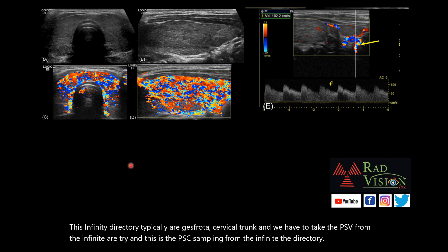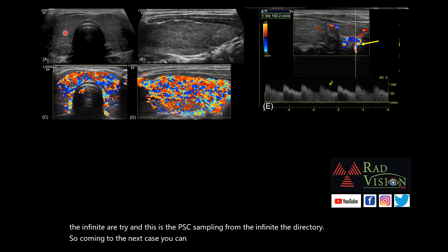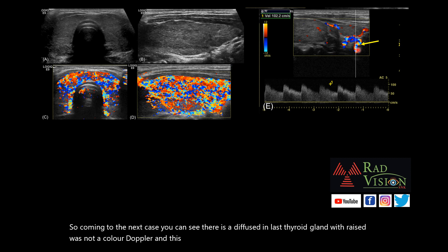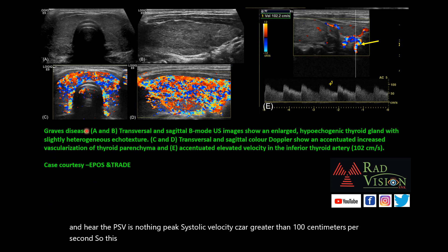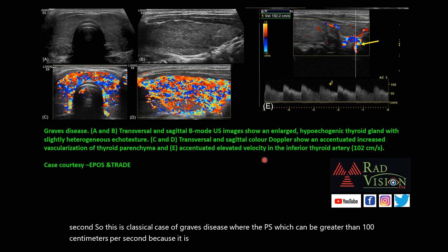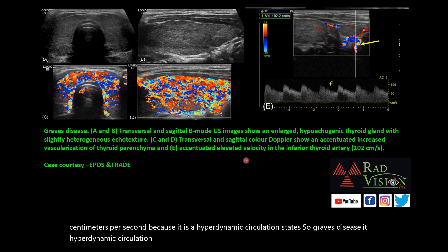In the next case, you can see a diffusely enlarged thyroid gland with raised vascularity on color Doppler. The PSVs from the inferior thyroid artery are greater than 100 centimeters per second. This is a classical case of Graves disease — because it is a hyperdynamic circulation state, the PSVs of the inferior thyroid artery are greater than 100 centimeters per second.